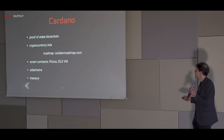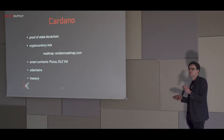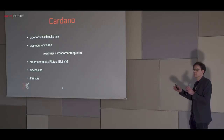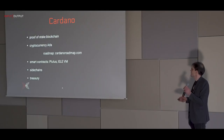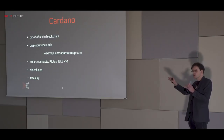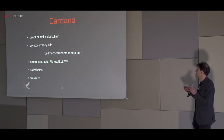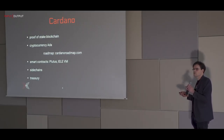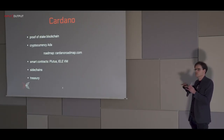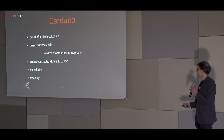Smart contracts on Ethereum and other platforms tend to have exploits from time to time, creating a large attack surface. For Cardano, we'll have a settlement layer that does all the bookkeeping, and on top of that compute layers where smart contracts live. This gives a small attack surface on the settlement layer, and we'll keep the settlement layer for basic bookkeeping as simple as possible, with a clear separation between those two.